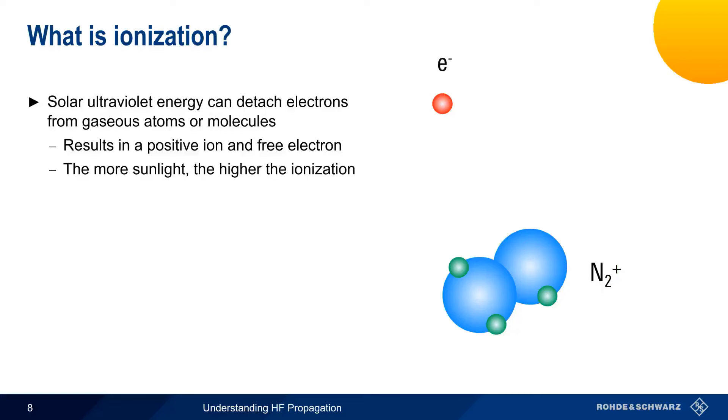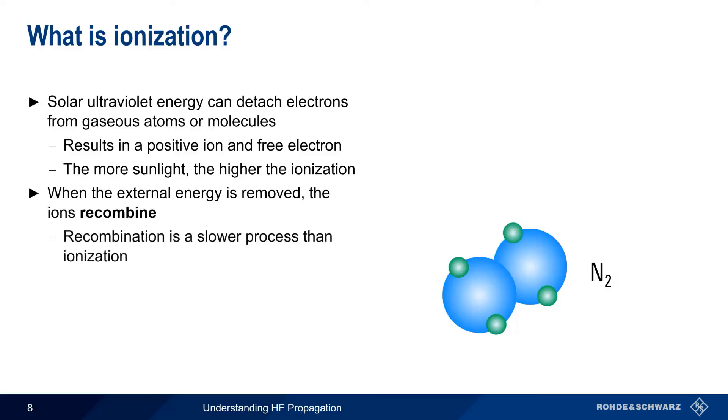When that part of the atmosphere rotates away from the Sun, that is, at night, the energy is removed, and the ions recombine to form electrically neutral atoms or molecules. Note that recombination is a slower process than ionization. Atmospheric ionization increases rapidly at dawn, but decreases less rapidly after dark.